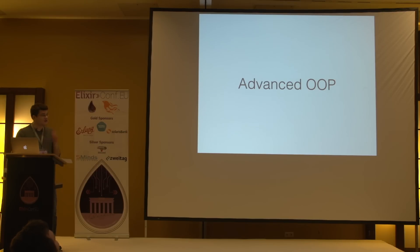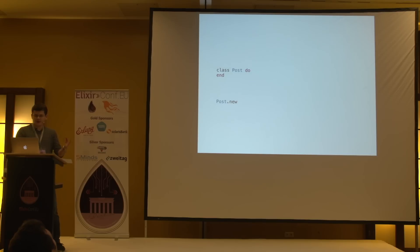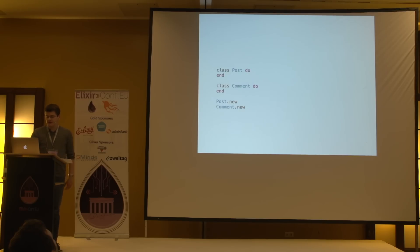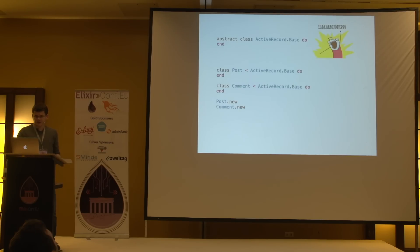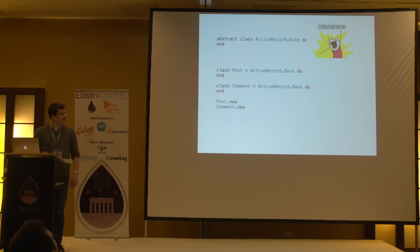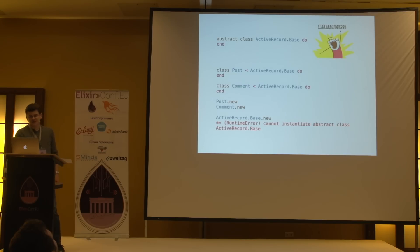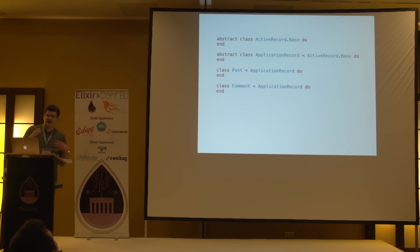Here's some more advanced content I was working on recently. Maybe you have a post, maybe you have a comment, and maybe they share some functionality. So perhaps you want to have an abstract class. When you try to instantiate the abstract class, it will fail. You can also have a hierarchy of abstract classes if you want — you can have many.